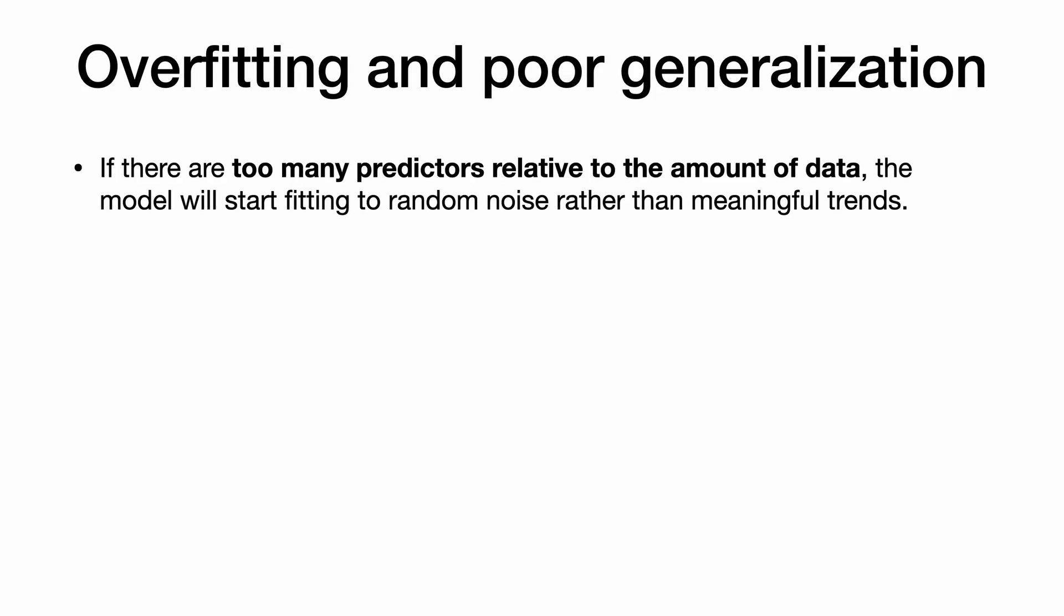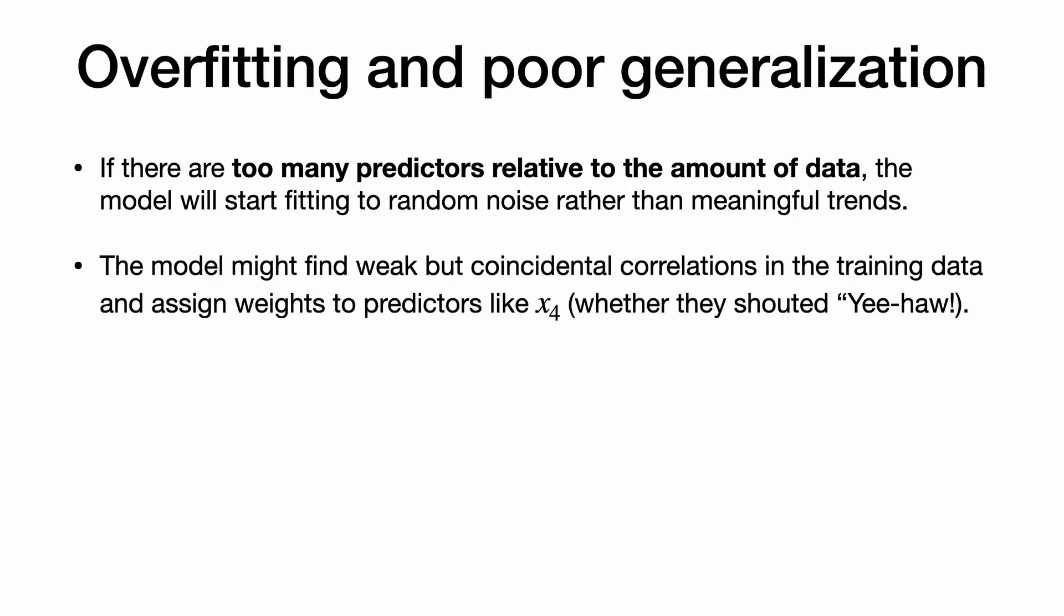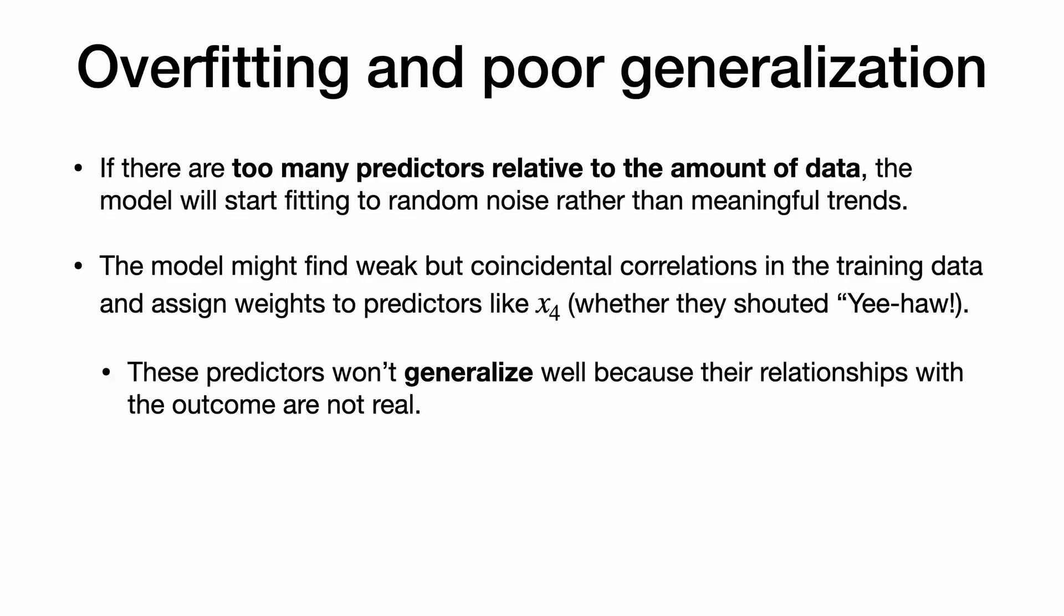Overfitting leads to poor generalization. If there are too many predictors relative to the amount of data, the model will start fitting to random noise rather than meaningful trends. The model might find weak but coincidental correlations in the training data and assign weights to predictors like X4, whether they shout yee-haw! These predictors won't generalize well because their relationships with the outcomes are not real.